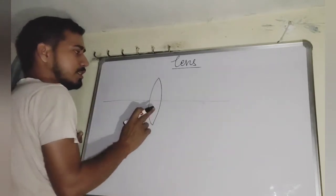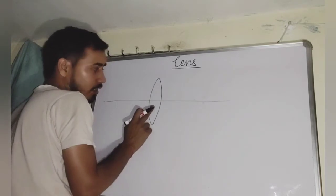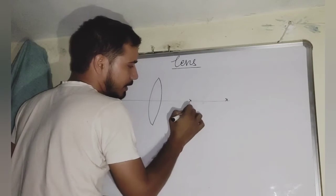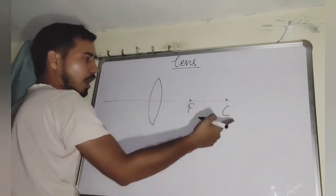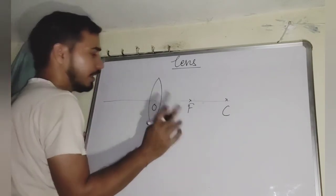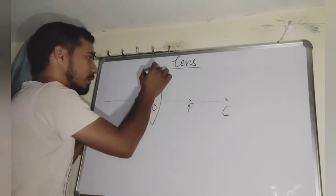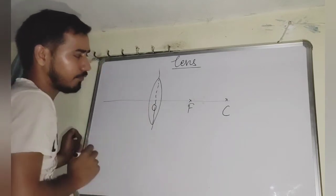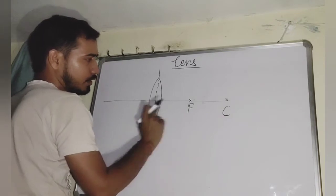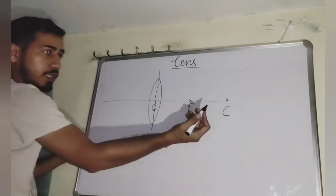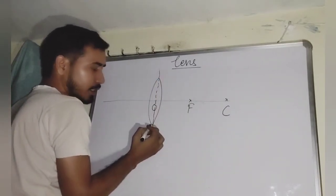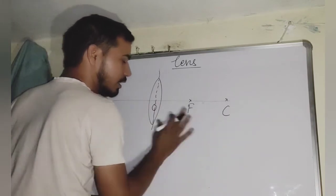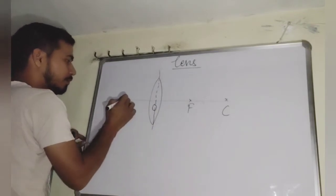Since we have considered both curved surfaces to be exactly similar, the center of curvature and focus of the first surface is exactly equal to those of the second surface. The midpoint of the transparent refracting medium is regarded as the optical center of the lens. The distance from the optical center to the center of the solid sphere from which the spherical surface is taken is the radius of curvature, and half of that is the focal length.